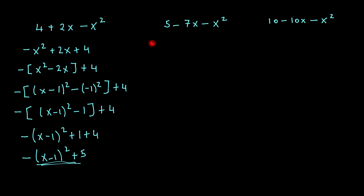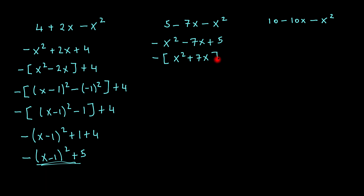Let's look at this one now. Once again, I'll rewrite it — and that would be minus 7x plus 5. So I'll factor out the negative and put that into a square bracket. That will give me x squared. Now once again, we just follow the same procedure.